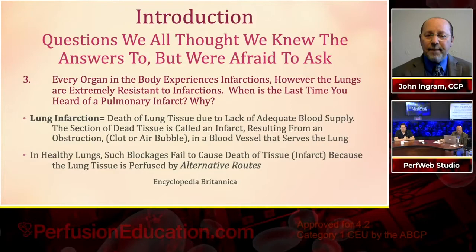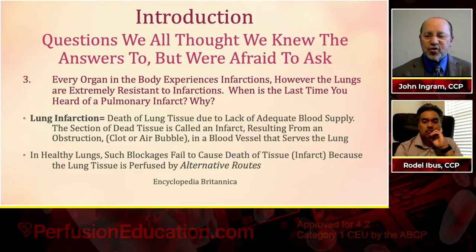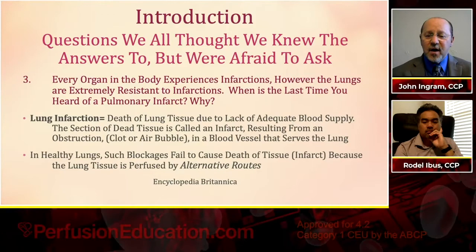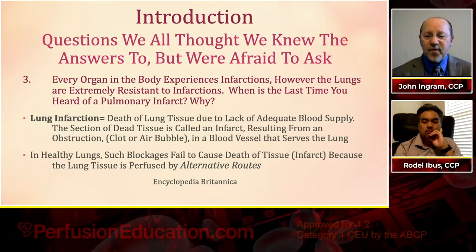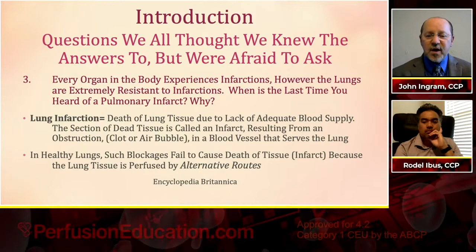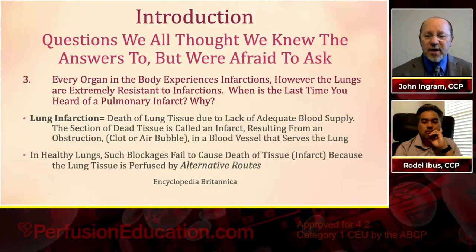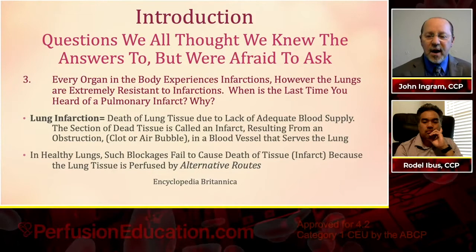Why do we very rarely hear about a pulmonary infarct? We hear about myocardial infarcts, strokes, and many other areas that can have ischemia from blockage, but why hardly ever in the lung? Lung infarction is death of lung tissue due to lack of adequate blood supply — an infarct resulting from obstruction like a clot or air bubble in a blood vessel serving the lungs. Encyclopedia Britannica even states: in healthy lungs, such blockages fail to cause death of tissue because the lung tissue is perfused by alternative routes.